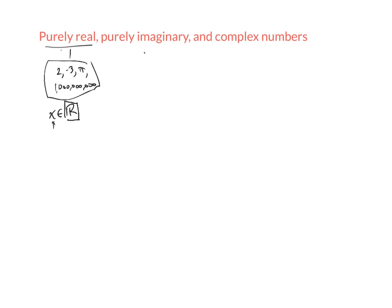Now, purely imaginary numbers are numbers like you get when you're taking the square root of a negative number. So the square root of negative 4 would be 2 times the square root of negative 1, which is i. The square root of negative 16 would be 4 times the square root of negative 1, which is i.